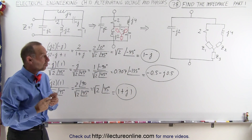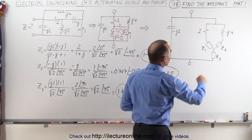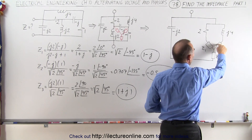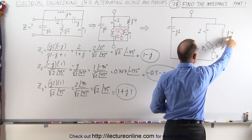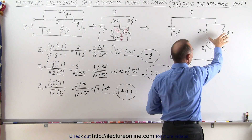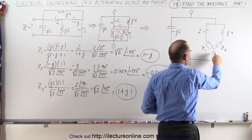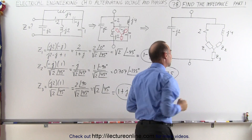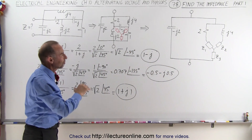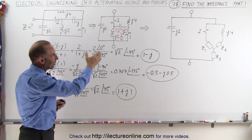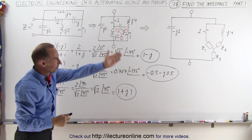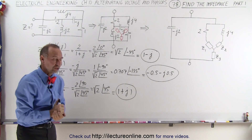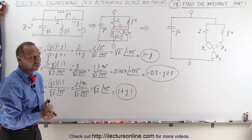Now we can go ahead and start adding everything together. We're going to add this resistor to impedance z1, this inductive reactance with z2, and then add those together in parallel. Then we add that in series with z3, and take those two in parallel to get the total impedance. We've converted the delta component of the bridge circuit into a Y component and can now use these results to solve the rest of the circuit. That's part 1 — stay tuned for part 2.